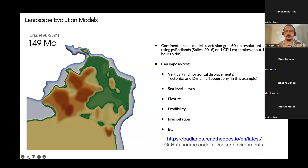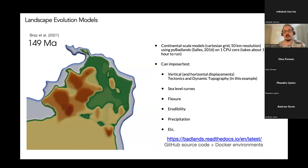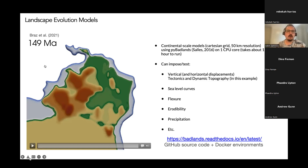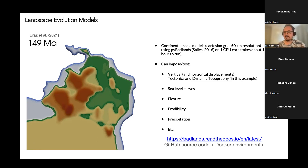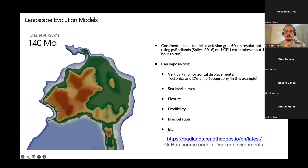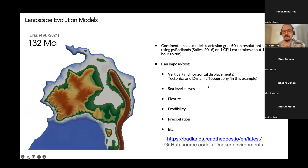Tristan has also created a tool called pyBadlands — a Python-based tool that currently runs on a single core. A landscape evolution model of the whole Australian continent over 150 million years at 50 kilometer resolution takes about one hour to run. That's fantastic because we can run dozens of these models and test things like dynamic topography from mantle convection.